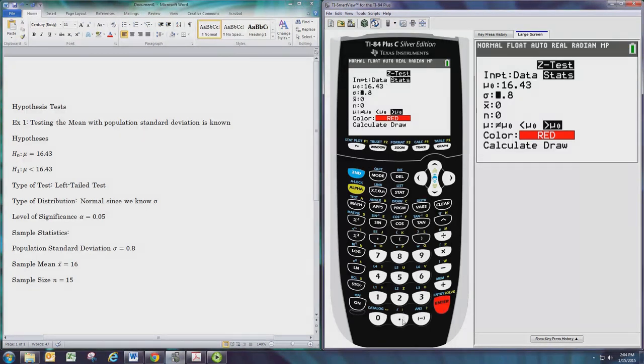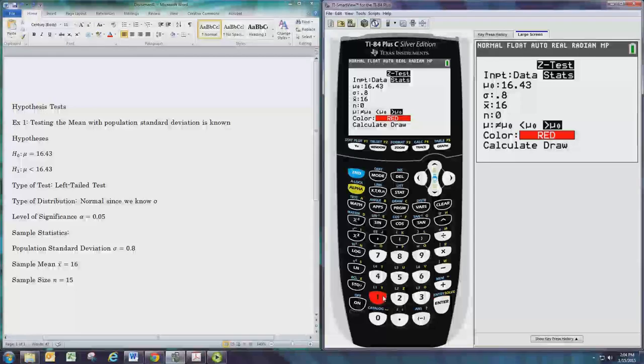There's sigma, our population standard deviation. We know that's 0.8. X̄, our sample mean, is 16, and n, our sample size, is 15.